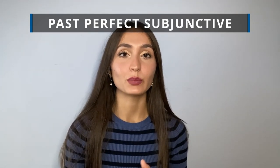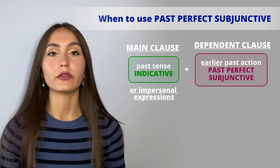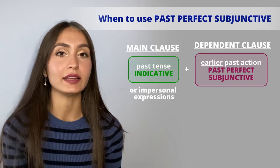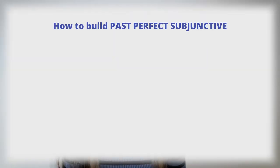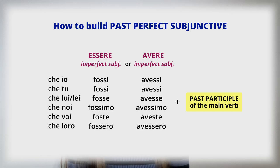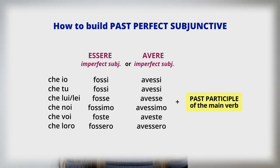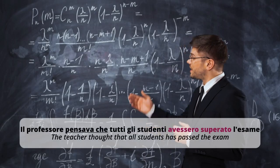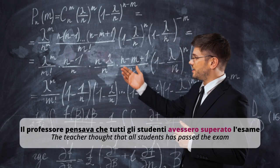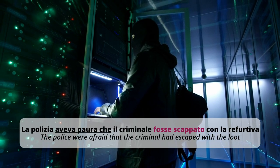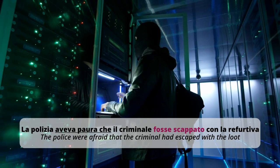The last tense of the subjunctive — but not the least important — is the past perfect. We use this tense when the action in the dependent clause happened before the action in the main clause, which is expressed in the past tense. It is formed using the imperfect subjunctive of 'avere' or 'essere' — che io fossi, che tu fossi, che lui fosse, che noi fossimo, che voi foste, che loro fossero / che io avessi, che tu avessi, che lui avesse, che noi avessimo, che voi aveste, che loro avessero — plus the past participle. Examples: 'sembrava che avesse iniziato a piovere'; 'il professore pensava che tutti gli studenti avessero superato l'esame'; 'la polizia aveva paura che il criminale fosse scappato con la refurtiva.'